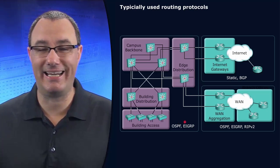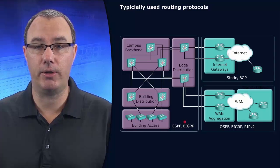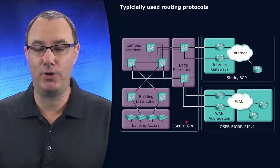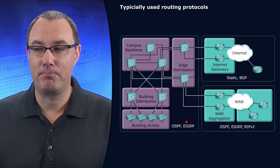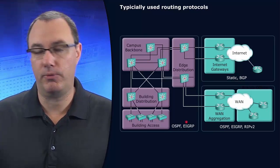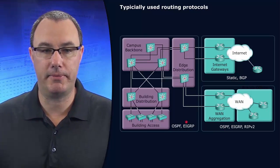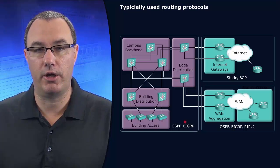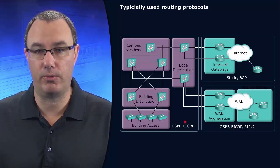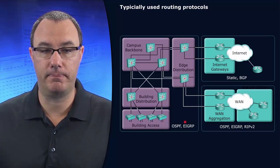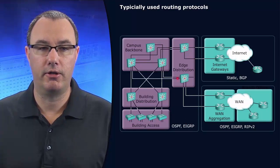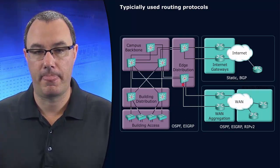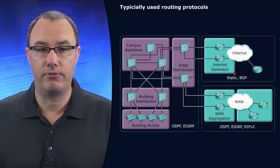EIGRP: Enhanced Interior Gateway Routing Protocol. We are not going to talk about IGRP, which was the older, previous generation of this protocol that really wasn't widely implemented. EIGRP is a hybrid routing protocol that runs the DUAL algorithm - the Diffusing Update Algorithm. Both OSPF and EIGRP run inside of our infrastructure.